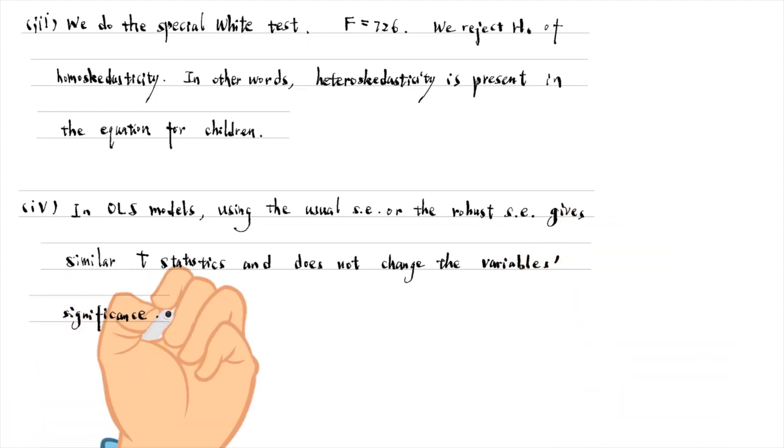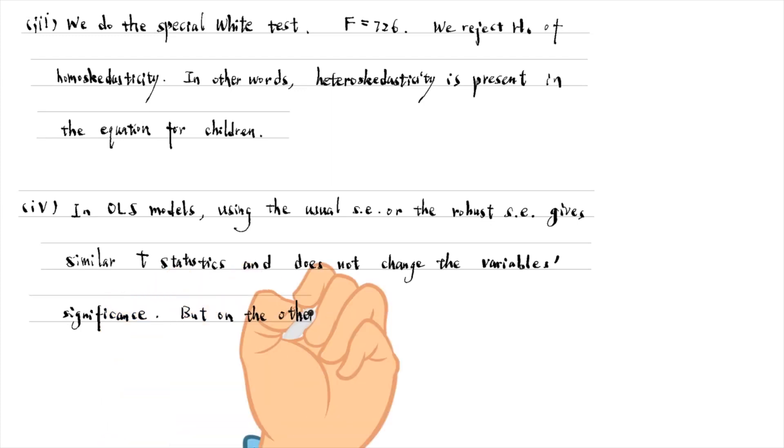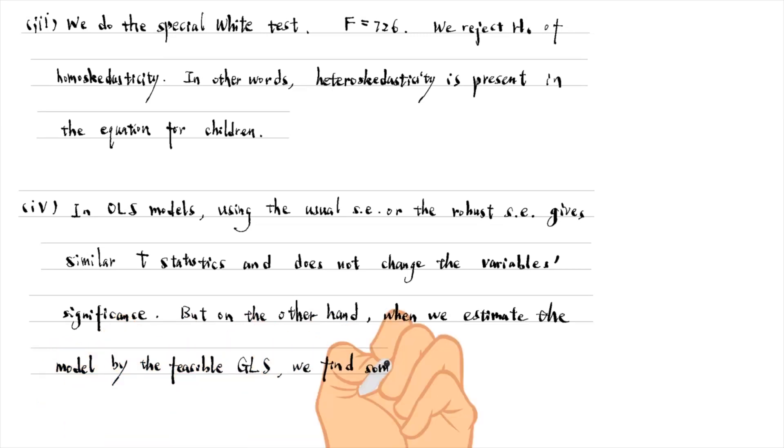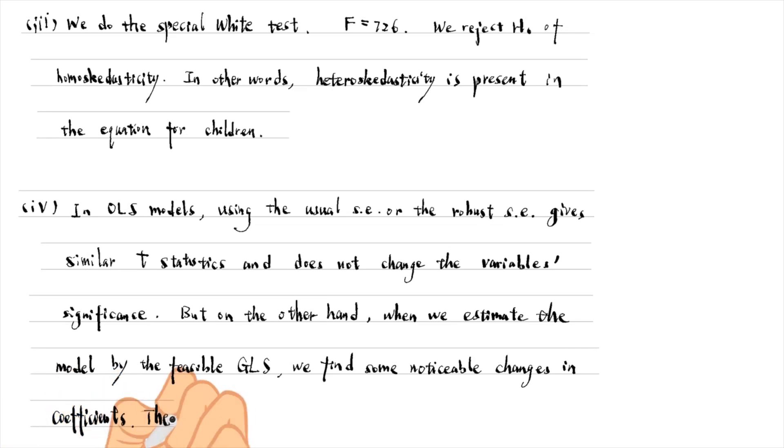But on the other hand, when we try to estimate the model by the feasible GLS, we find some noticeable changes in the coefficients. The electricity effect drops substantially and it becomes less statistically significant.